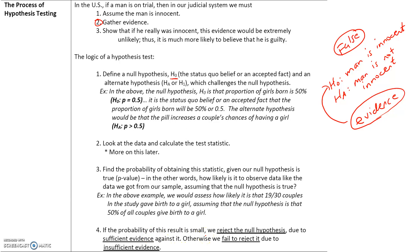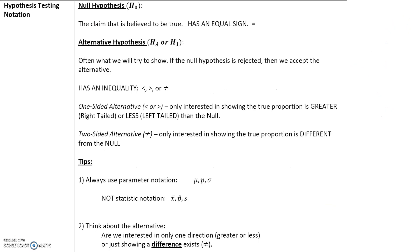Step 4: if the probability of this result is small, then we reject the null hypothesis due to sufficient evidence against it; otherwise we fail to reject it due to insufficient evidence. For example, if we had sufficient evidence against the null hypothesis we would reject it and say the man is not innocent. If we could not find sufficient evidence, we would fail to reject the null hypothesis.